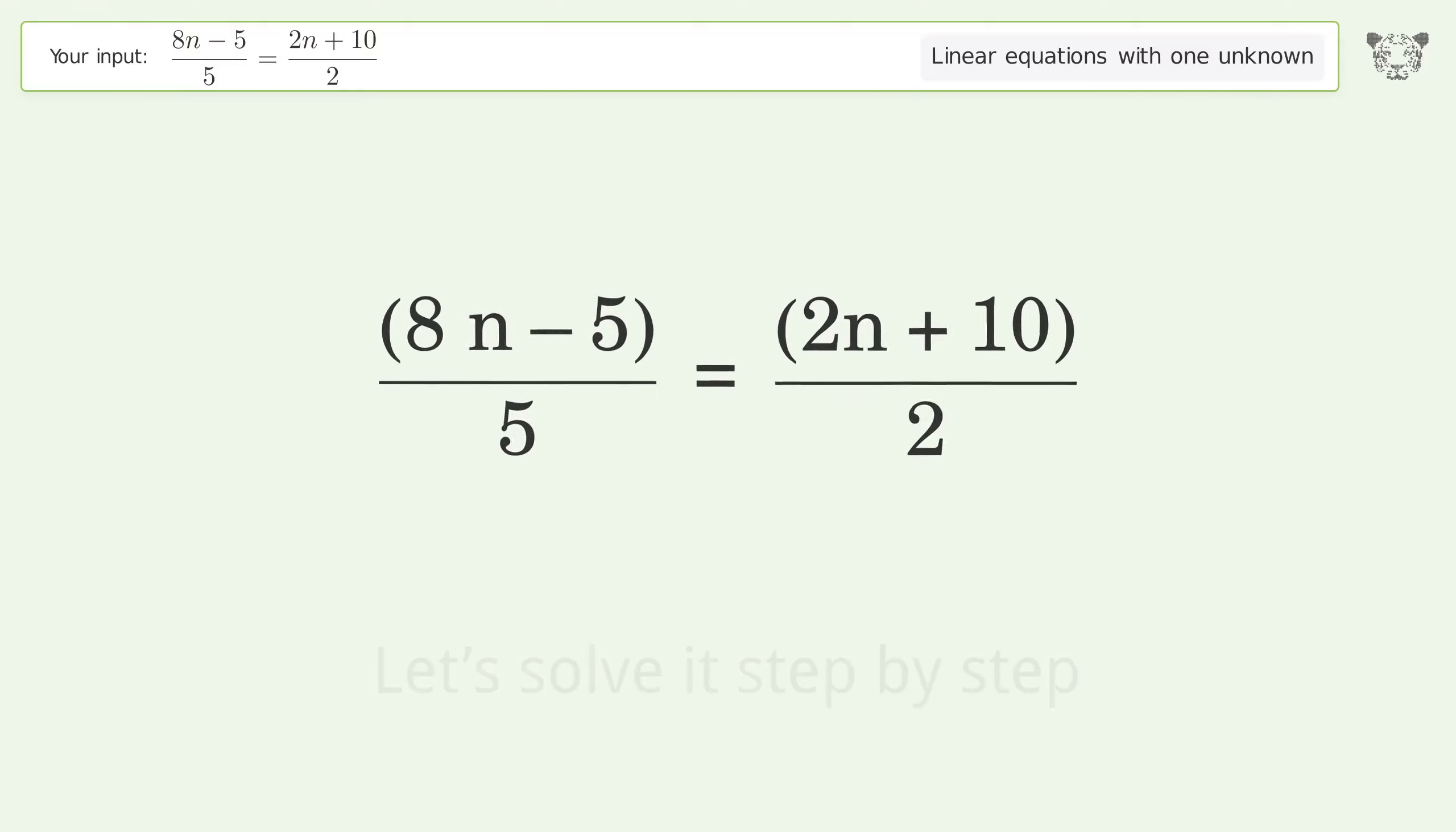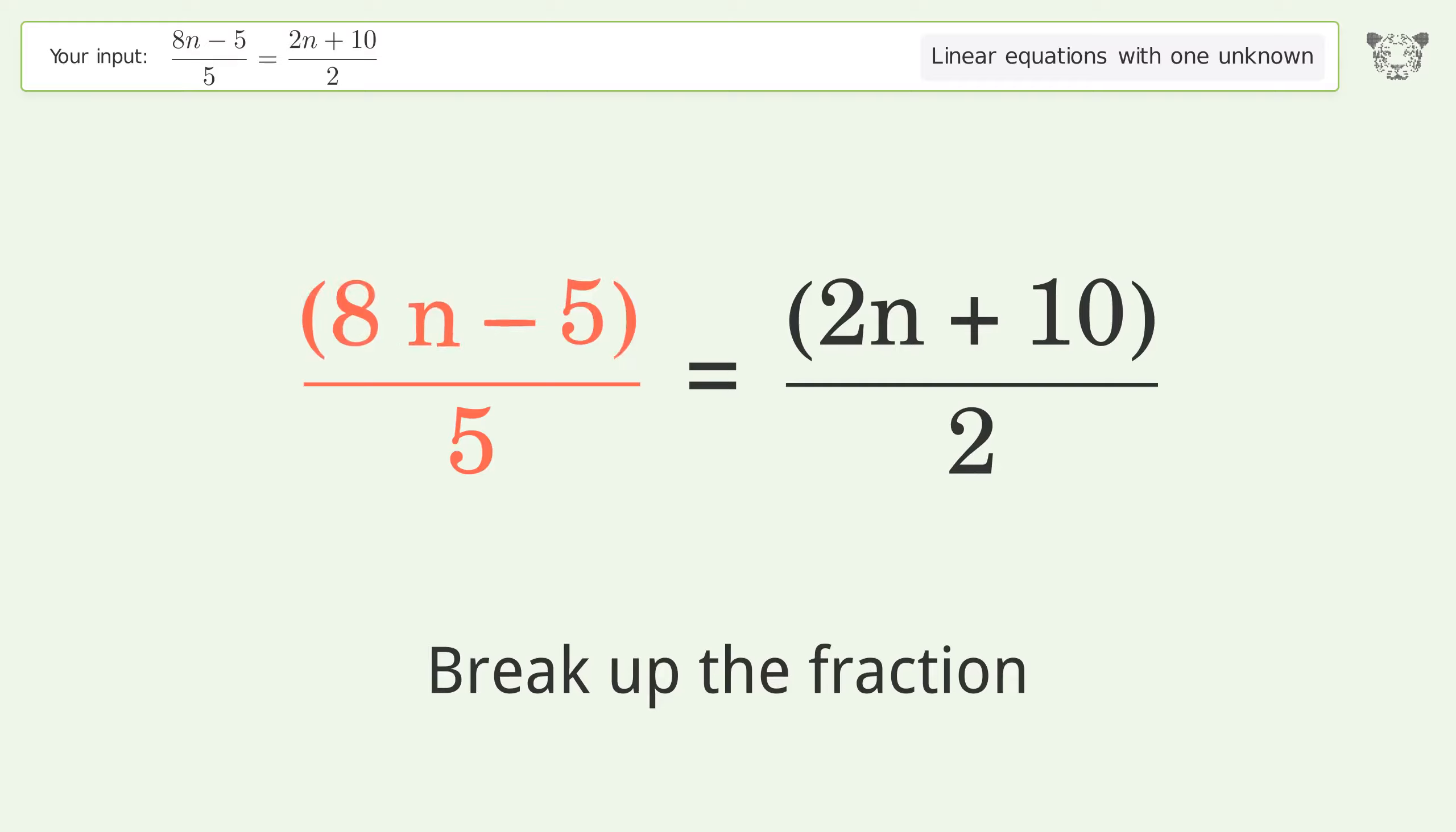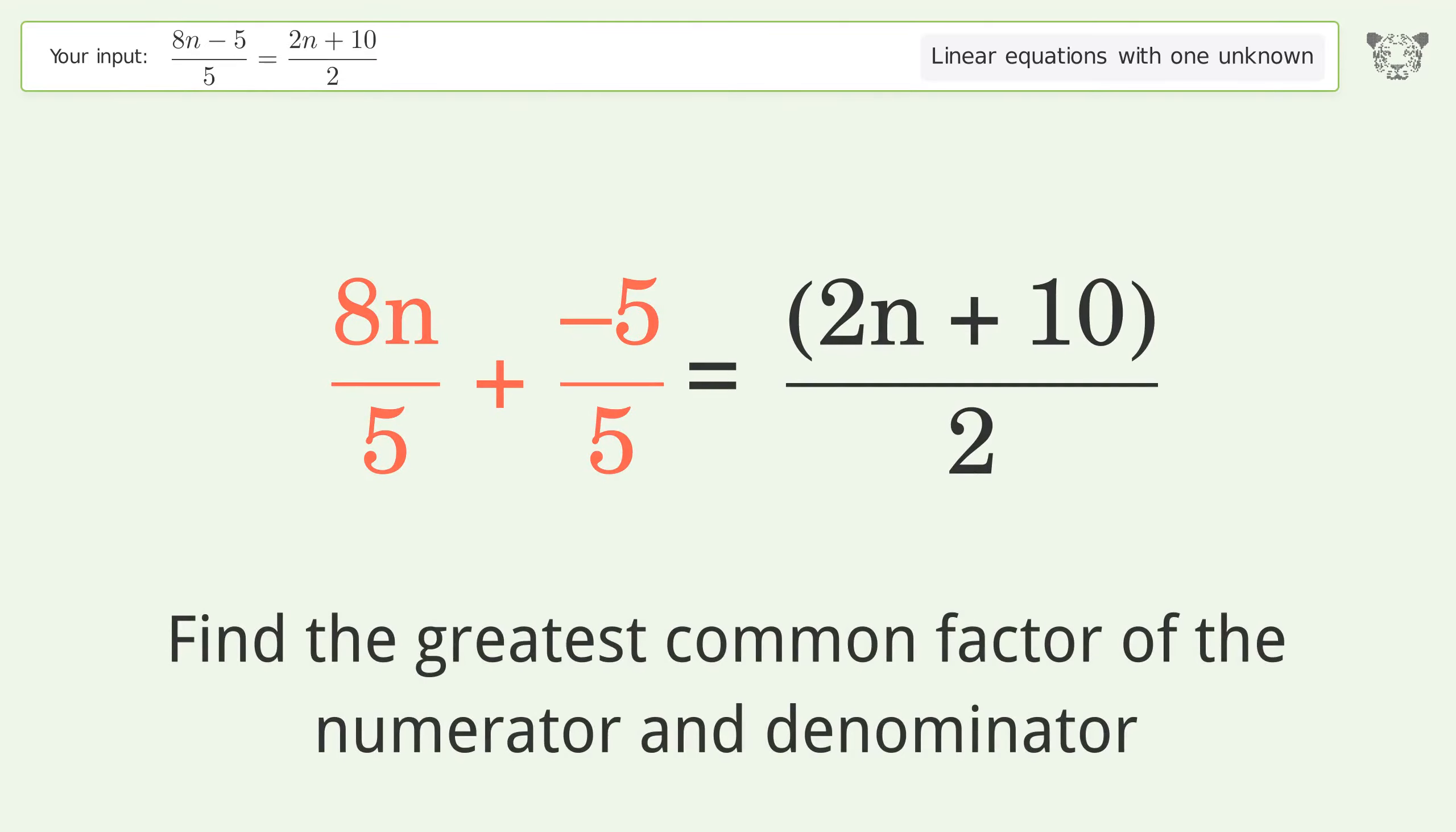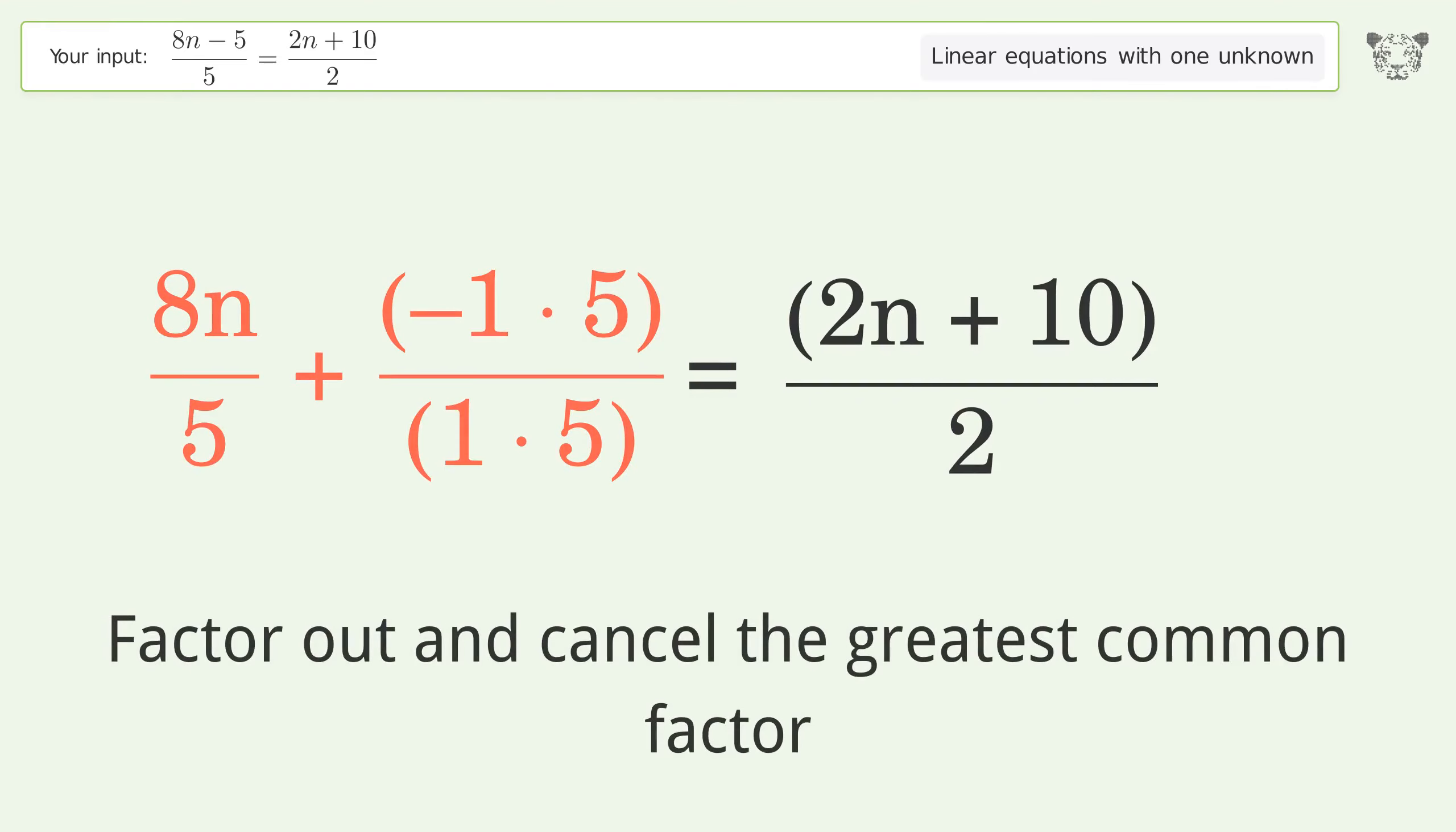Let's solve it step by step. Simplify the expression. Break up the fraction. Find the greatest common factor of the numerator and denominator. Factor out and cancel the greatest common factor.